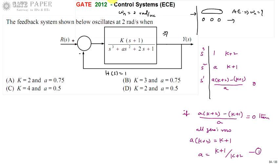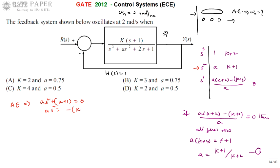The all-zeros row is the s¹ row, so the row just above it is the s² row, which has coefficients a and (k + 1). The auxiliary equation is: a·s² + (k + 1) = 0. Solving: s² = −(k + 1)/a, and taking the square root gives s = ±j·√[(k + 1)/a].